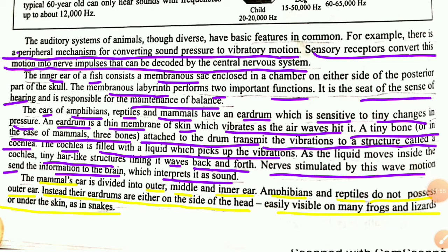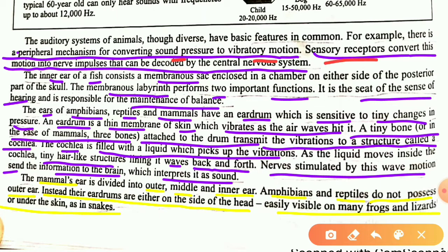The auditory system for animals is diverse but has basic features. First, a peripheral mechanism converts sound pressure to vibratory motion. Then sensory receptors in the body convert that motion to nerve impulses. After that, the central nervous system — which includes the brain and spinal cord — decodes and interprets the signals. This is the whole hearing mechanism in short.